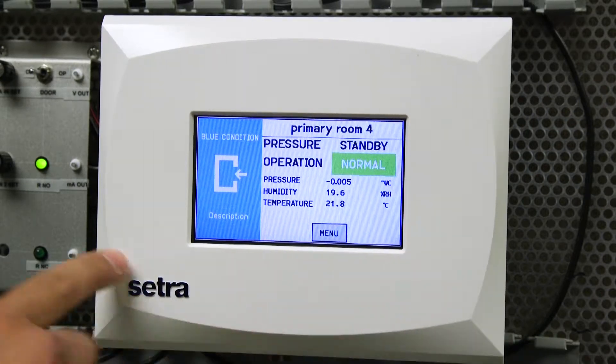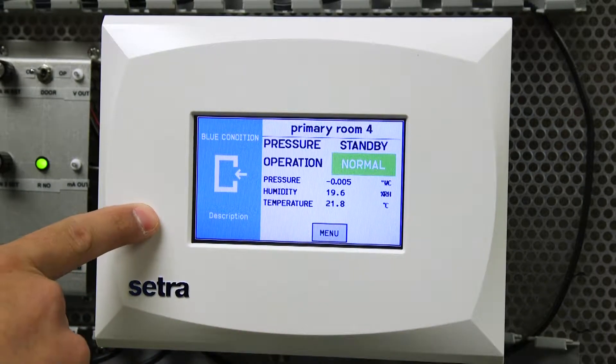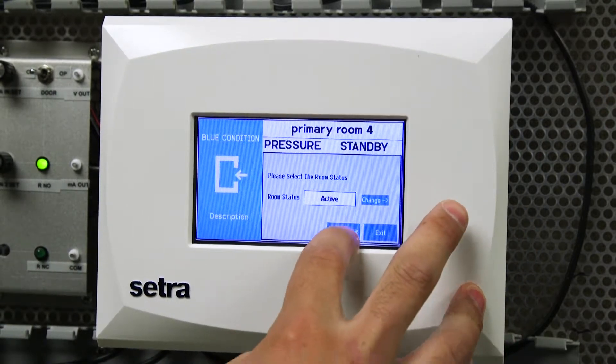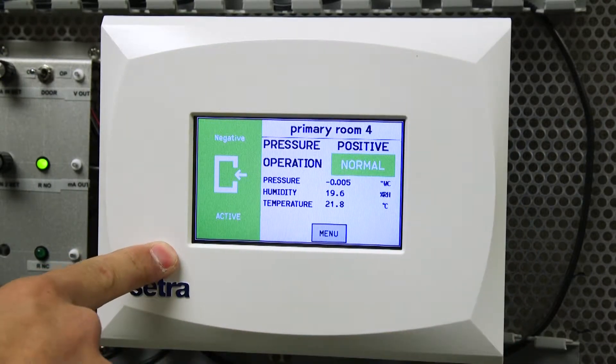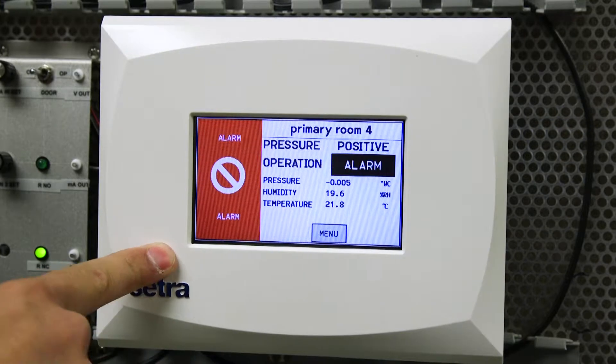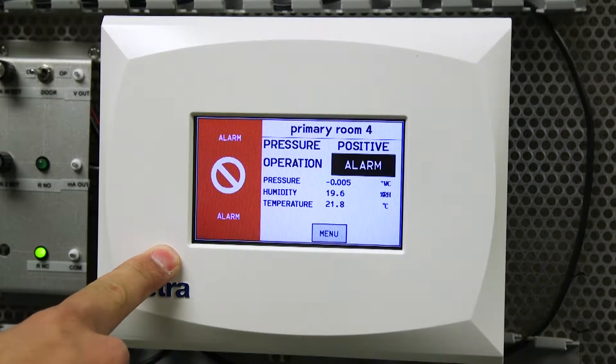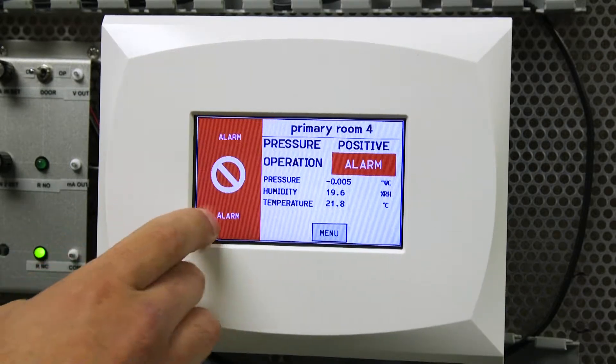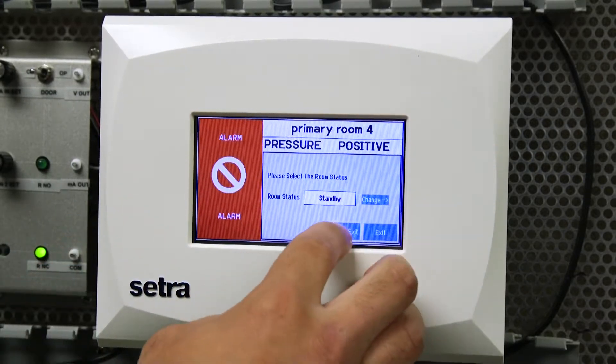So here we can see that when we're in standby we're blue. If I go ahead and hit here and hit save and exit we'll move into normal operation and then since we are outside of our alarm limits we go into alarm. So we can also go same thing here and go back in standby.